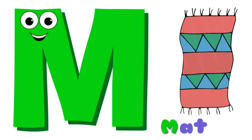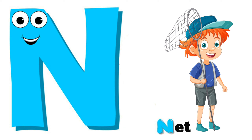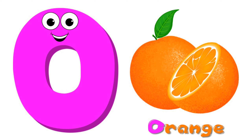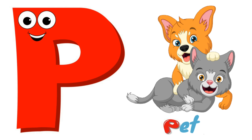M is for mat, m-m-mat. N is for net, n-n-net. O is for orange, o-o-orange. P is for pet, p-p-pet.